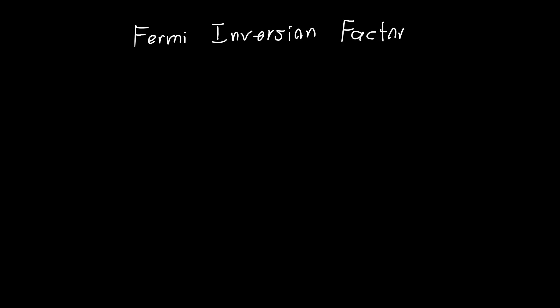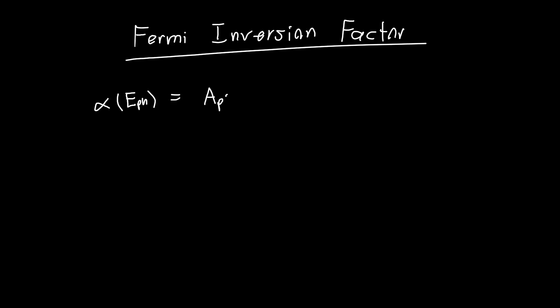In this video we're going to talk about the Fermi Inversion Factor. What is this and why do we care about it? Well, in the previous videos we derived an expression for the absorption spectra as a function of the photon energy. We said there was just this material parameter AP, multiplied by our reduced density of states as a function of the photon energy, divided by the photon energy. And in previous videos I have expressions for AP, density of states, and photon energy.